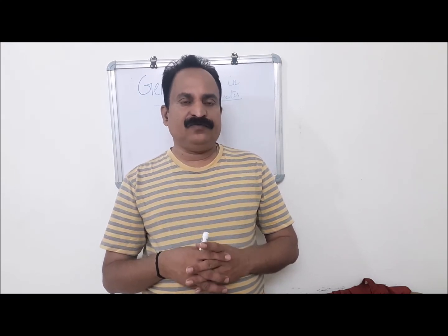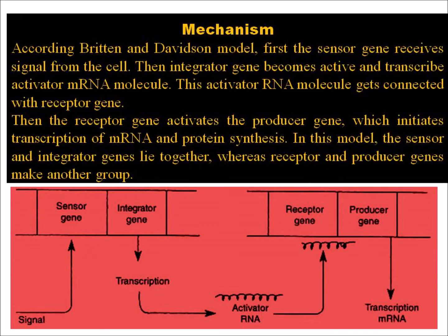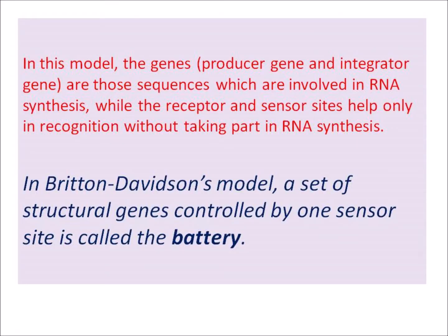Now we can see the mechanism of gene regulation in eukaryotes in Britten and Davidson's model. According to the Britten and Davidson model, first the sensor gene receives a signal from the cell, then the integrator becomes active and transcribes an activator mRNA molecule. This activator mRNA molecule gets connected with the receptor gene. Then the receptor gene activates the producer gene, which initiates transcription of mRNA and protein synthesis. In this model, the sensor and integrator genes lie together, whereas receptor and producer genes make another group. The producer and integrator genes are sequences involved in RNA synthesis, while the receptor and sensor sites help only in recognition without taking part in RNA synthesis.